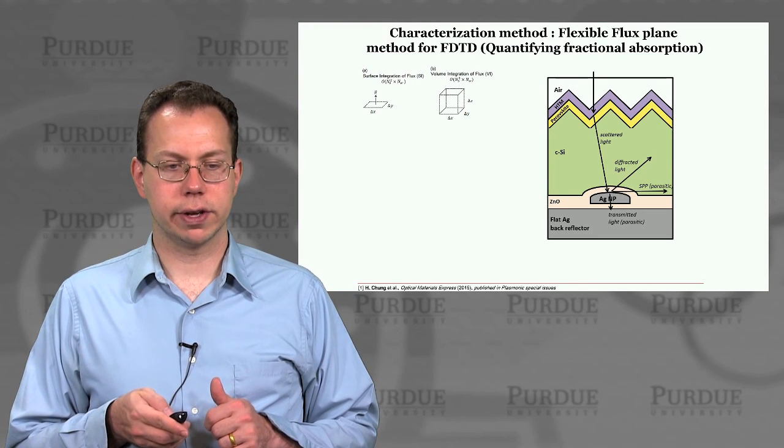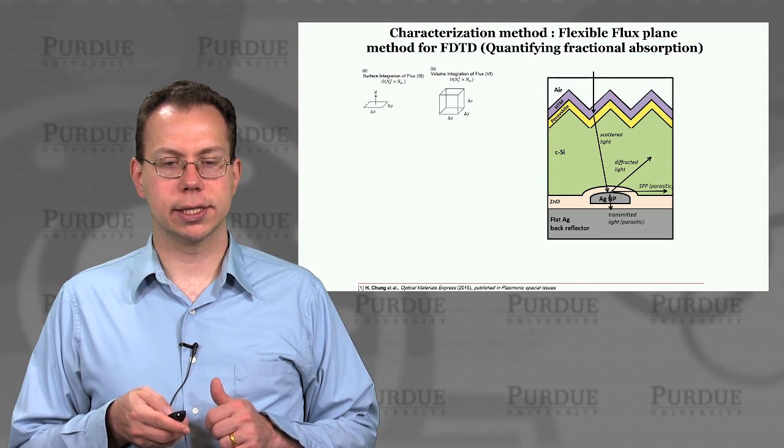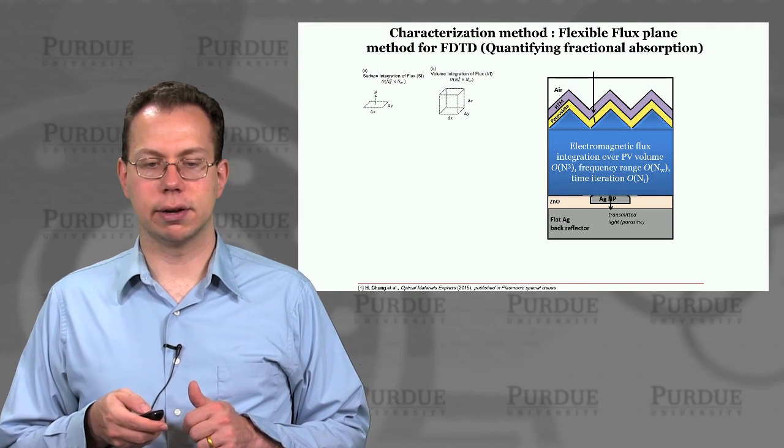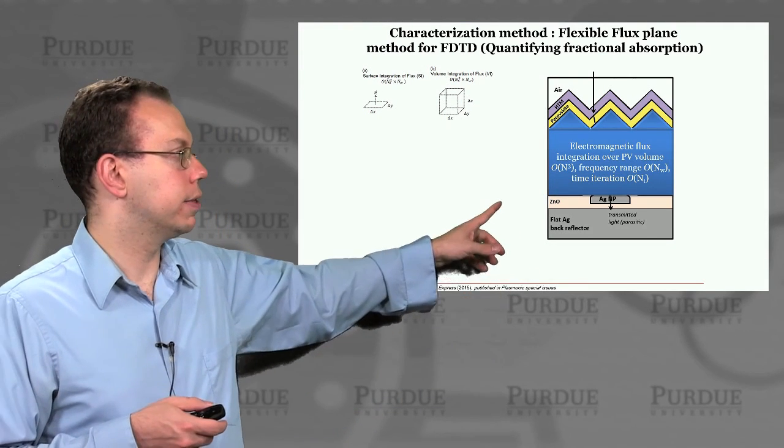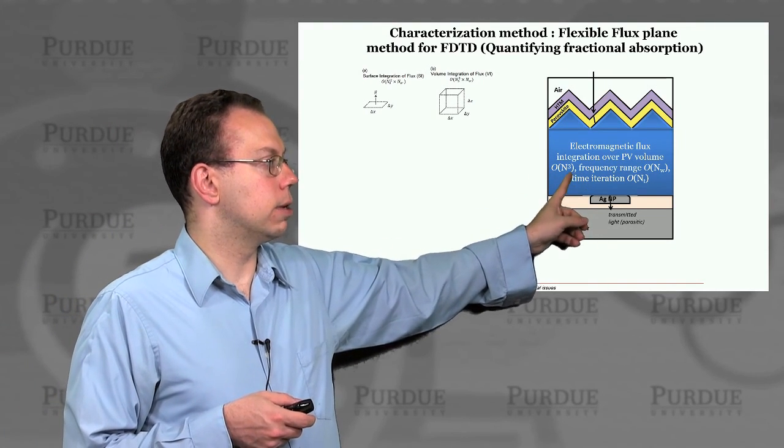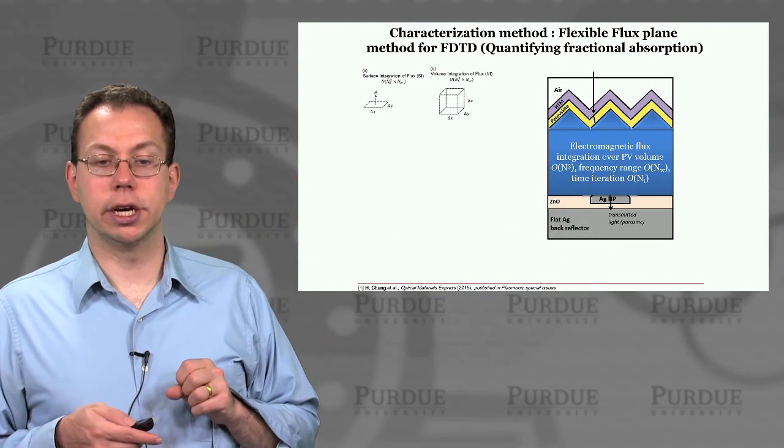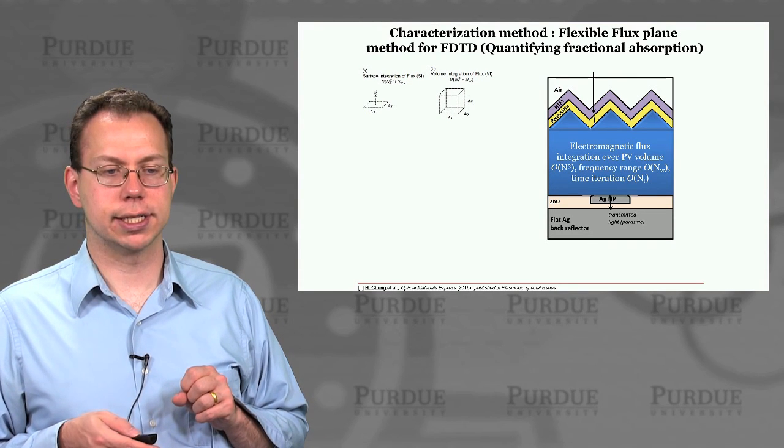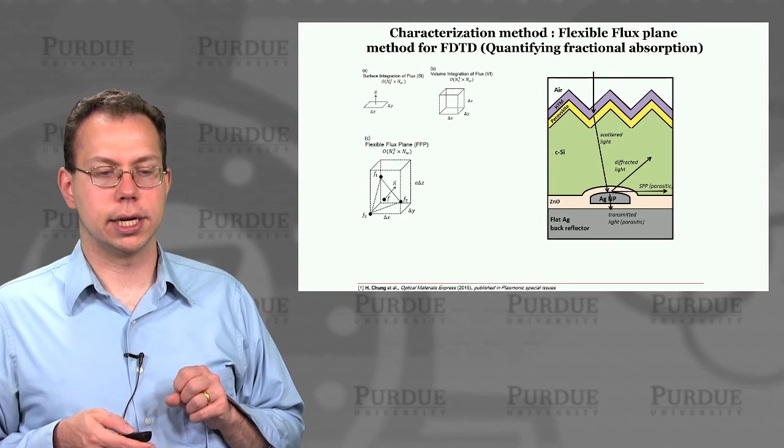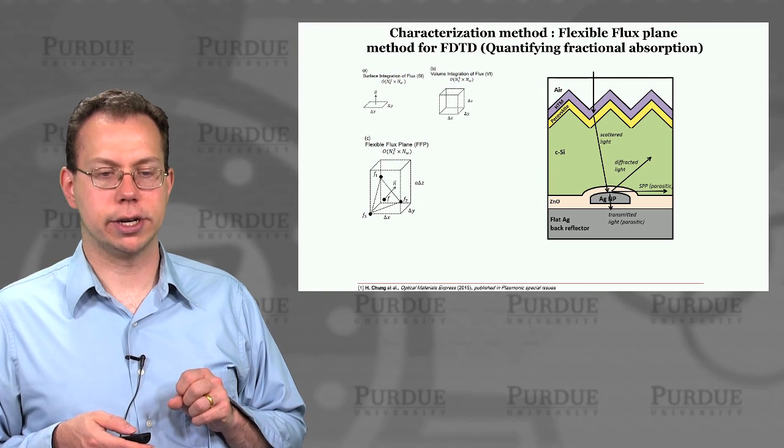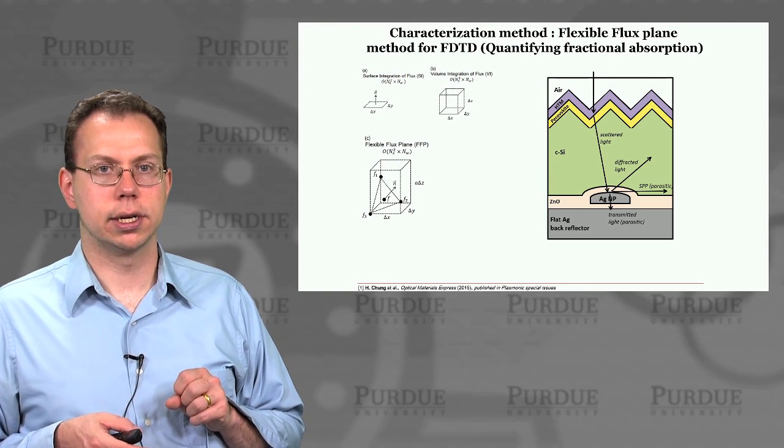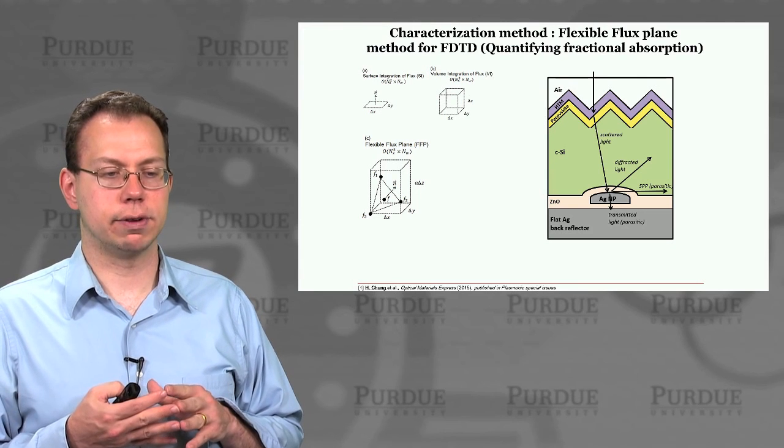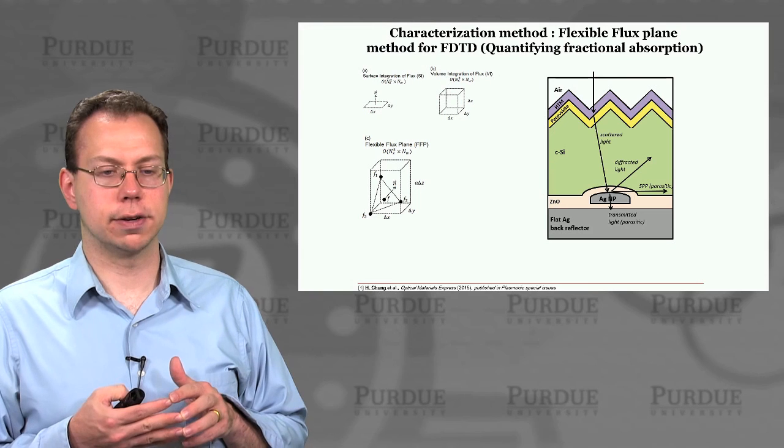However, if we have a more complex absorber region, and we really need to track absorption in that volume, then we can have this volume integration. But there is a problem, which is that this is very slow. So this generally scales as n cubed, if n is the size of the problem. So that actually slows down our whole simulation dramatically, if the volume is not extremely small.